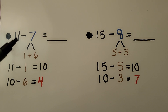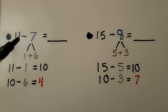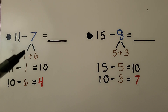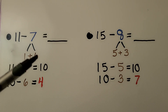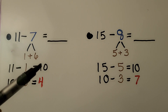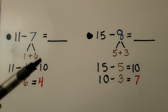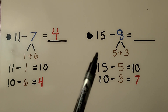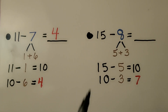Let's try a couple more. We've got 11 minus 7. We need to take 1 away from 11 to make it a 10. That means we break the subtrahend 7 up into a 1 and a 6. We take away the 1, make our 10, then take away the 6. We have 10 minus 6, which equals 4. So 11 minus 7 is equal to 4.